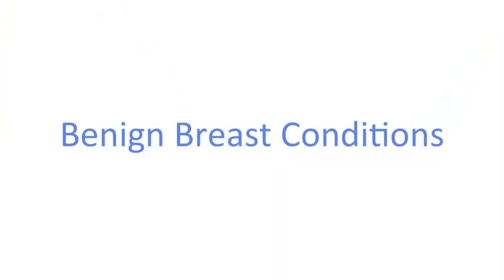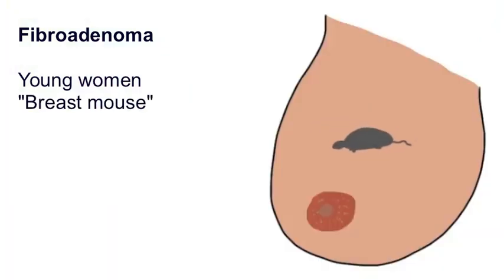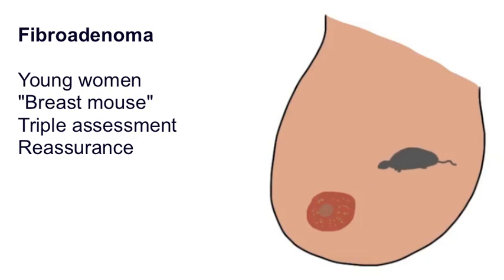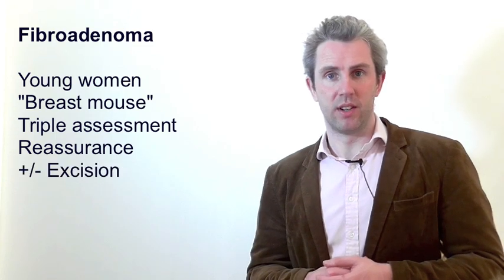Fibroadenomas are the commonest cause of breast lump in women under 30 and are an anomaly of normal breast development. Clinically, these lumps are smooth, rubbery, non-tender, mobile — often described as breast mice — and there are no cyclical changes. After triple assessment, patients can be reassured and the lump left alone; it may even disappear on its own. However, it may be excised if it has grown larger than 4 centimetres or if it is symptomatic.